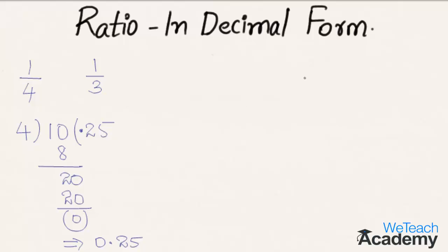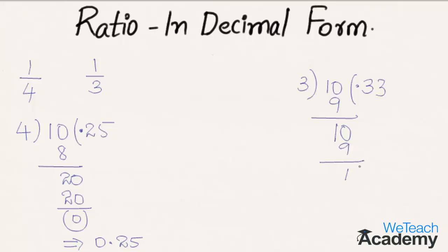Now let us write 1/3 in decimal form. As 1 is not divisible by 3, we write a decimal point and add 0 to get 10. 3 times 3 is 9, remainder 1. Adding 0 gives 10 again; 3 times 3 is 9, remainder 1. This pattern repeats, so 1/3 has a repeating decimal. We round off and consider 0.33.